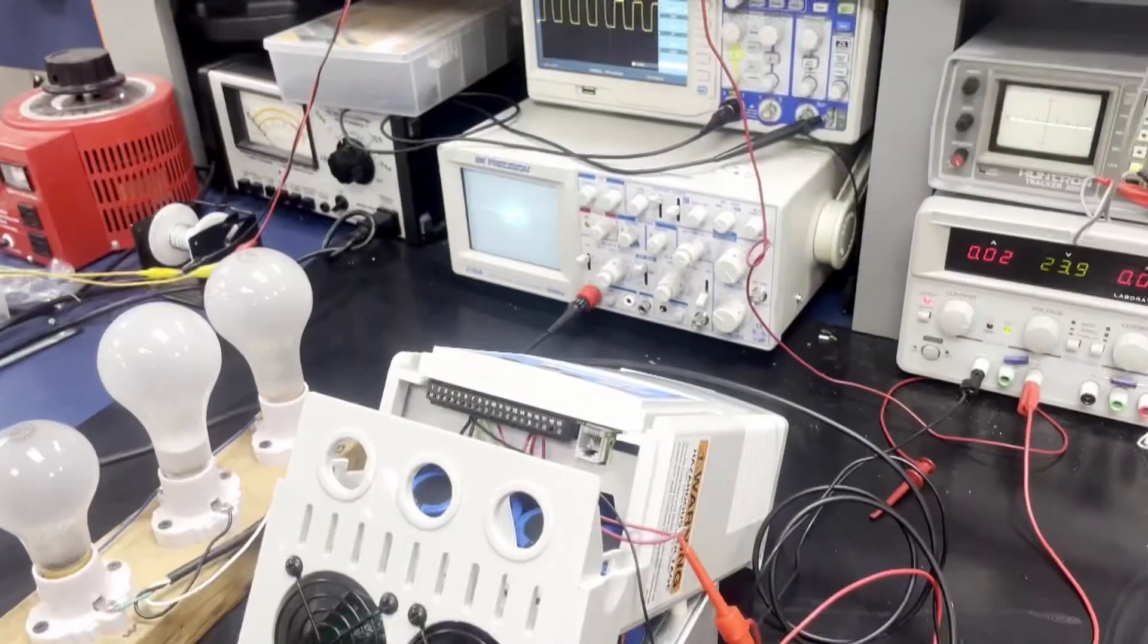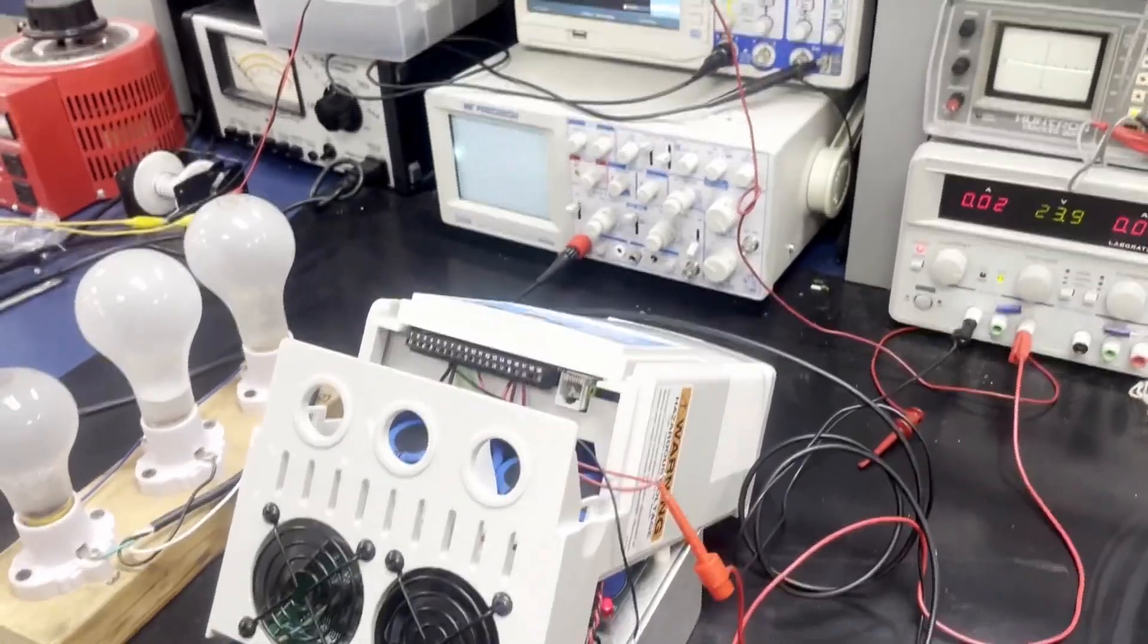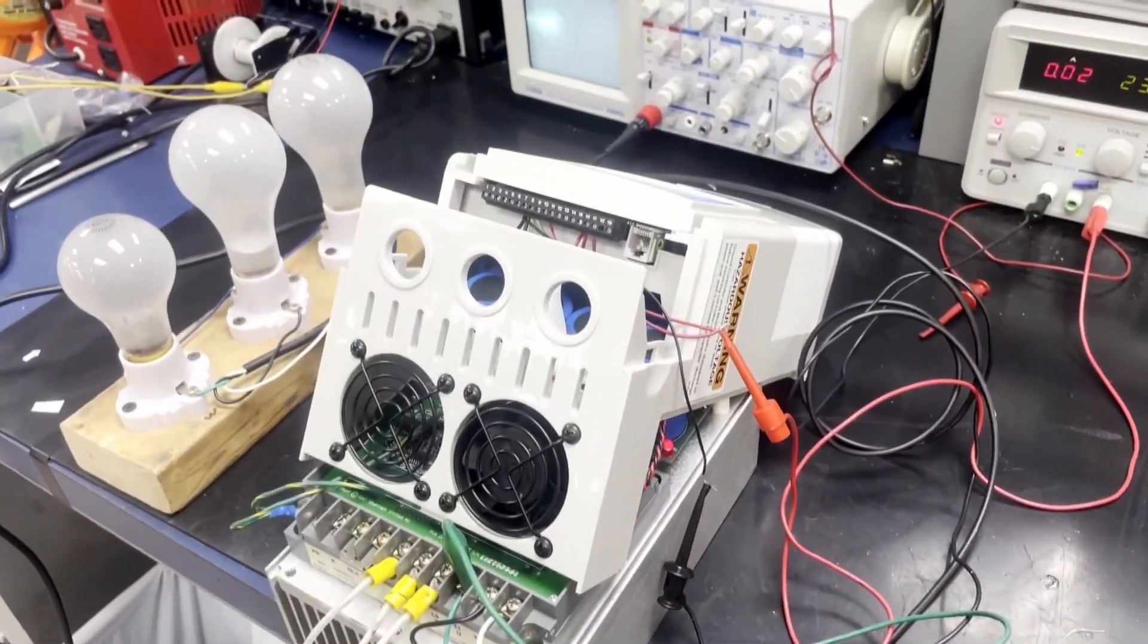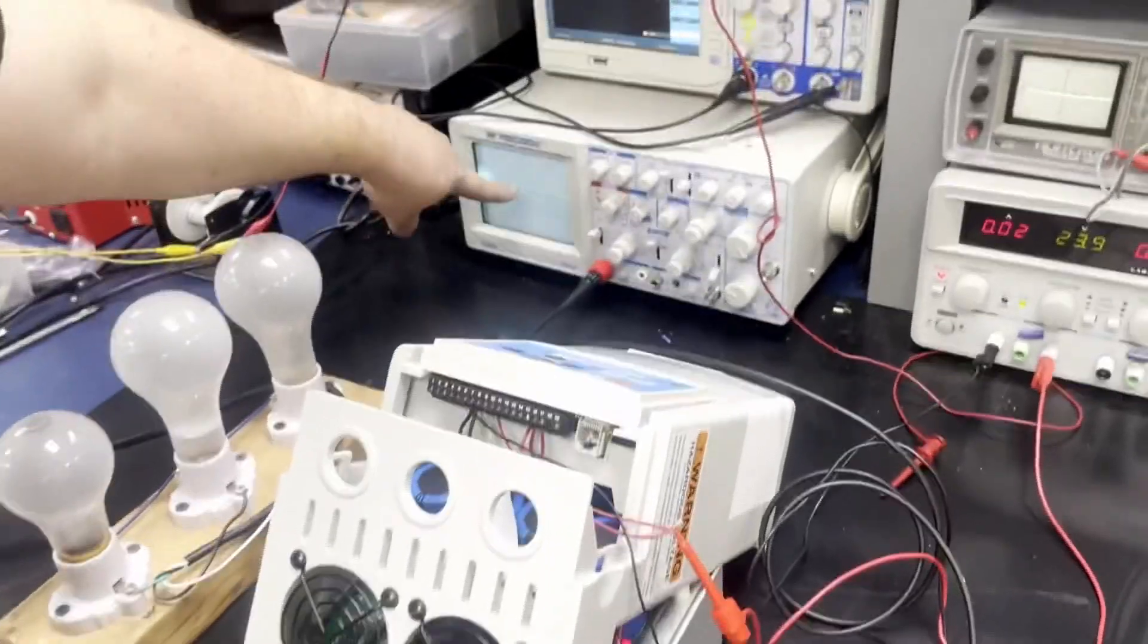So we will first demonstrate what happens before the drive trips out. We will see the waveform pattern of the output of the AC on the oscilloscope here.